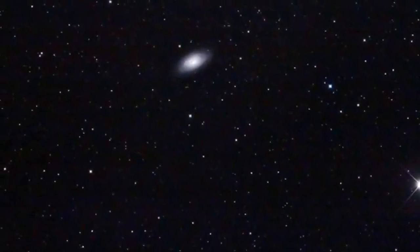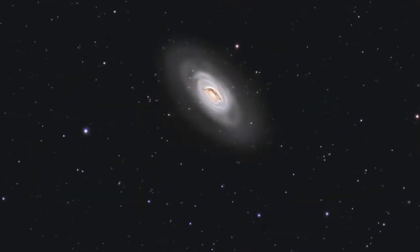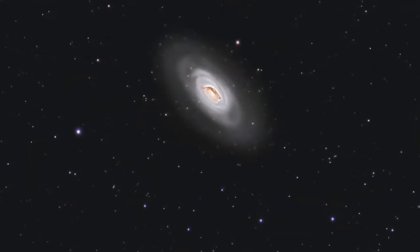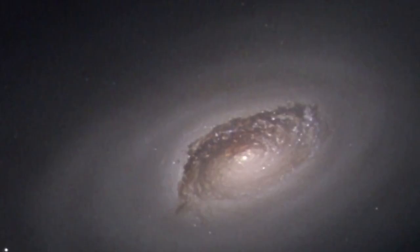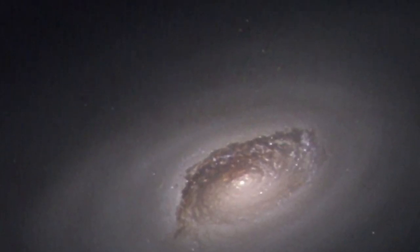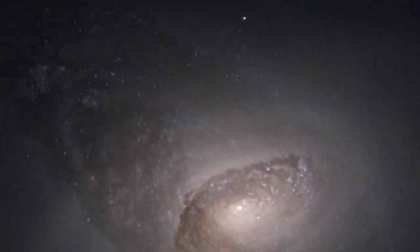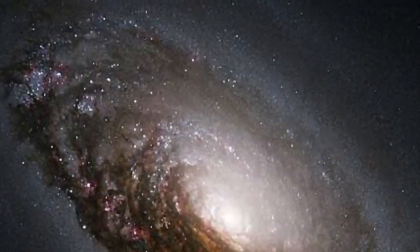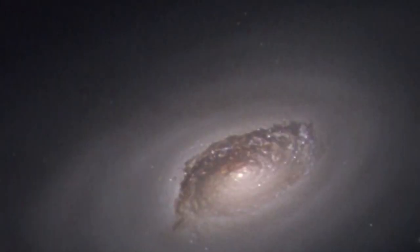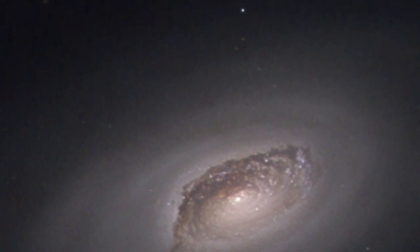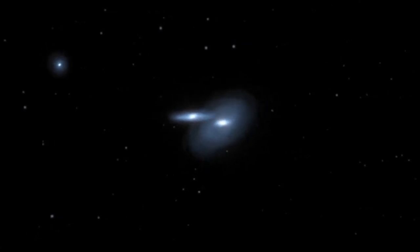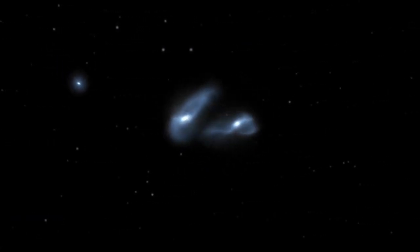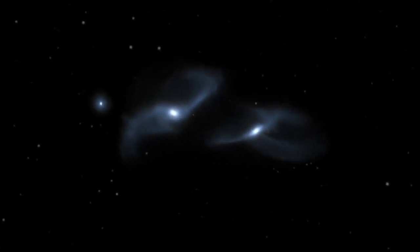In conclusion, the Black Eye Galaxy, or Messier 64, is a captivating spiral galaxy located 17 million light-years away in the constellation Coma Berenices. Its striking appearance, characterized by a dark dust lane crossing its bright core, has earned it its popular name. With its unique structure, counter-rotating disk, and active star-forming regions, the Black Eye Galaxy has provided astronomers with valuable insights into the processes of galaxy formation and evolution.